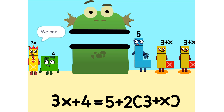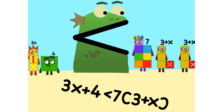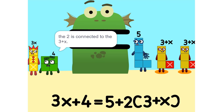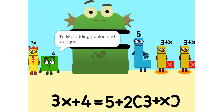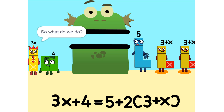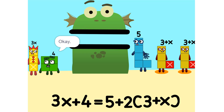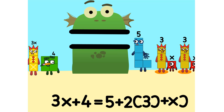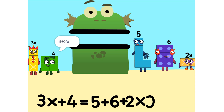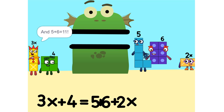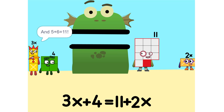I see something. We can add these. Why did that happen? Because the 2 is connected to the 3 plus x. So? It's like adding apples and oranges. So what do we do? See the 2 times 3 plus x? That's the same as 2 times 3 plus 2 times x, which is 6 plus 2x. And 5 plus 6 is 11.